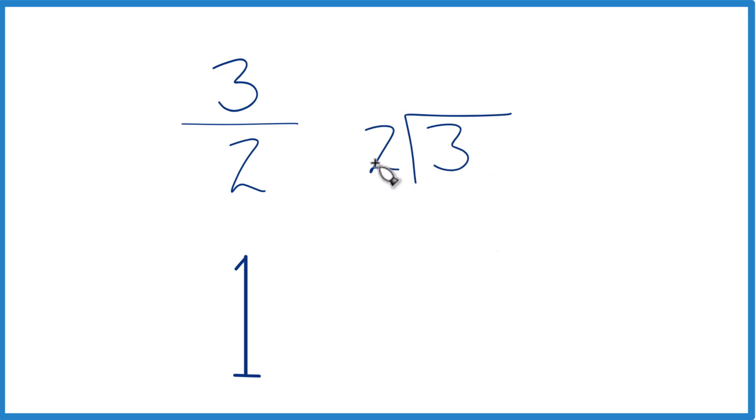3 divided by 2. So 1 times 2, that's 2. Subtract, we get 1. Let's call it 10. We'll just put a decimal point up here. 5 times 2, that's 10. So no remainder.